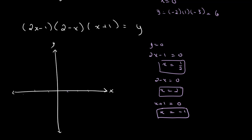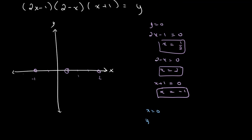Let's draw this out. We have x equals 1/2, which is about here; x equals 2, which is right here; and x equals negative 1. So this can be 1, this can be 2, and this is negative 1. Next, we find our y-intercept, which is when x equals 0. Then y equals negative 1 times 2 times 1, which gives y equals negative 2. So our y-intercept is at negative 2.